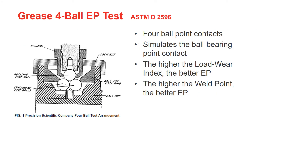Grease four-ball test based on ASTM D2596. In a ball bearing, we have point contact, which means the surface of the ball will be in contact with the outer layer of the inner race. This is considered Hertzian pressure and stress at the contact point. Four-ball test equipment is designed to simulate exact industrial applications inside the tribology lab. In this test, we have three balls at the bottom and one ball on top inside the cavity, and we fill the cavity with grease.